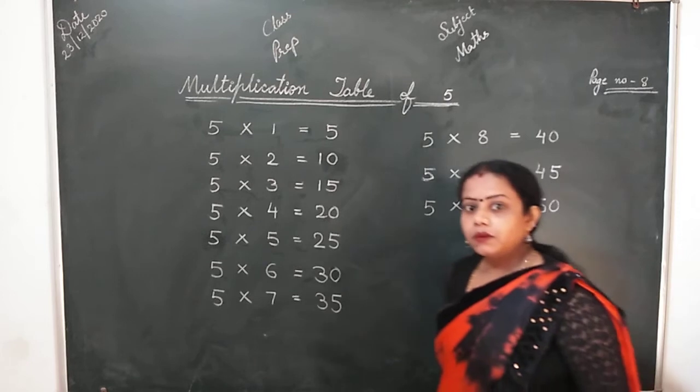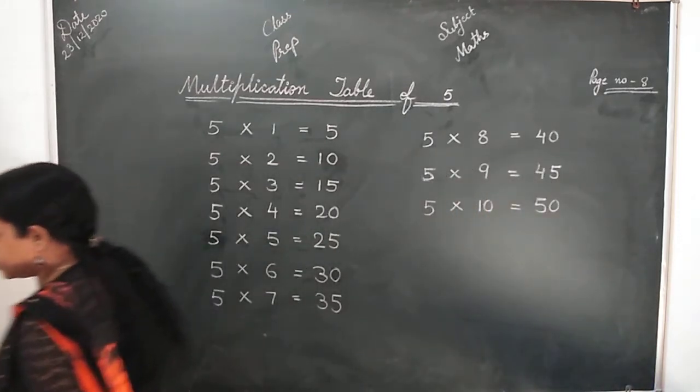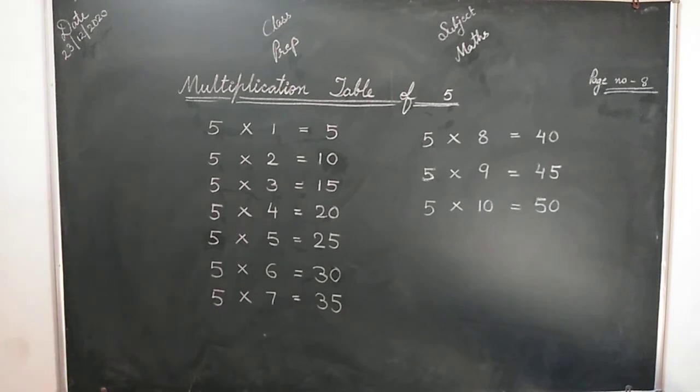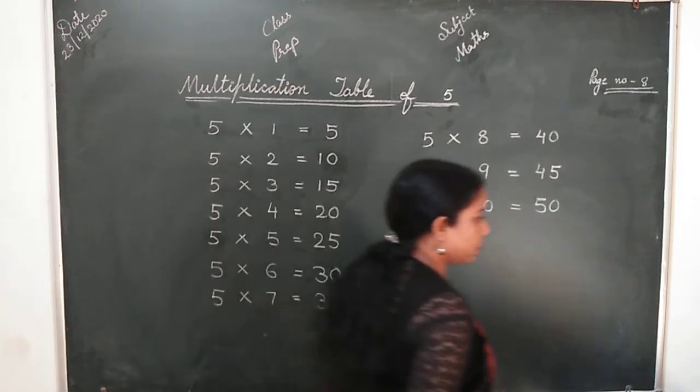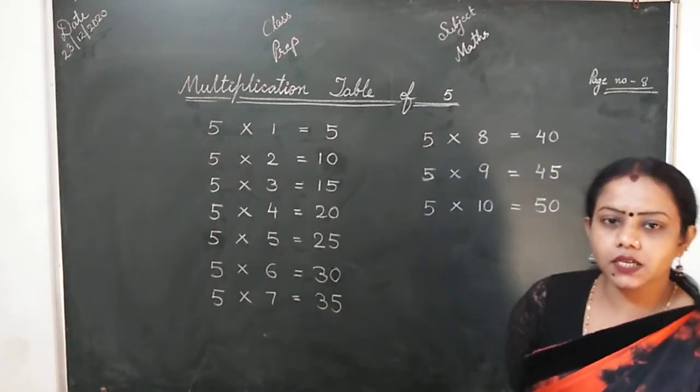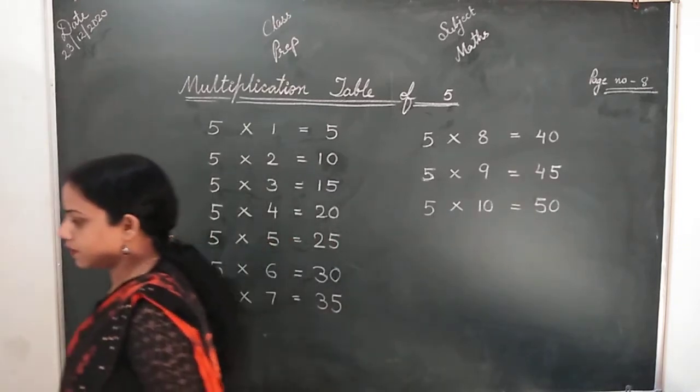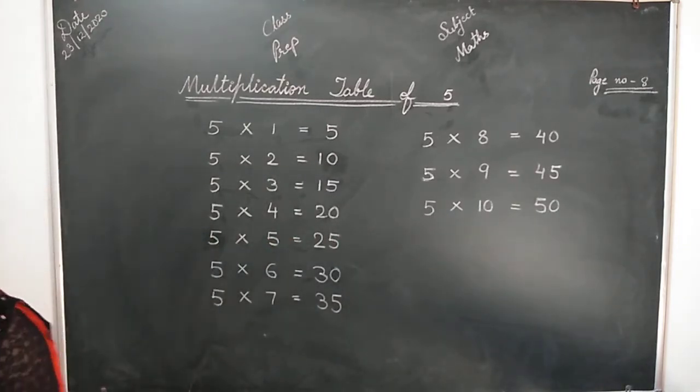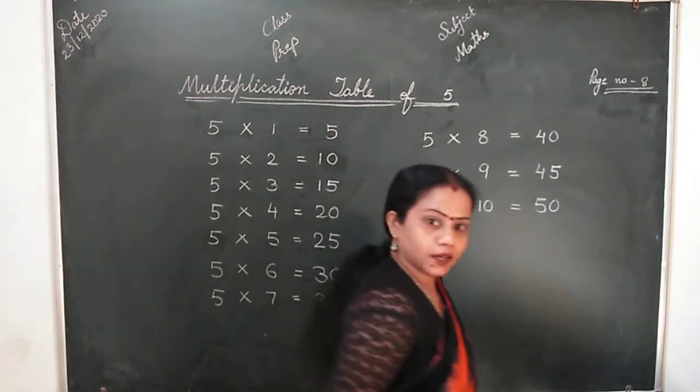Now, isse aage 3 ki table bolen ge. 3, 1s are 3. 3, 2s are 6. 3, 3s are 9. 3, 4s are 12. 3, 5s are 15. 3, 6s are 18. 3, 7s are 21. 3, 8s are 24. 3, 9s are 27. 3, 10s are 30.